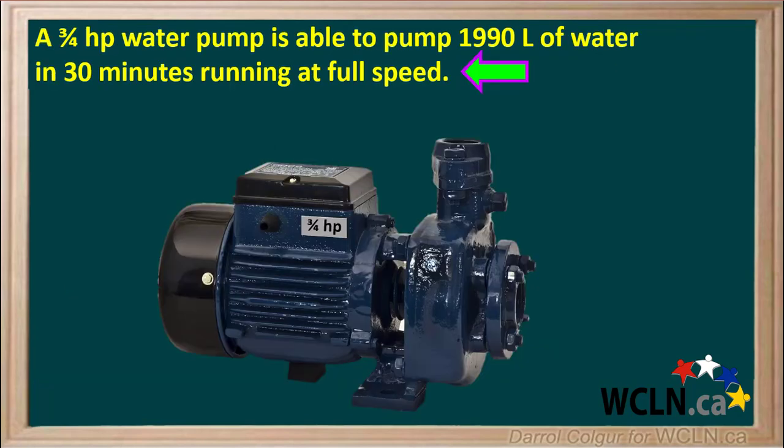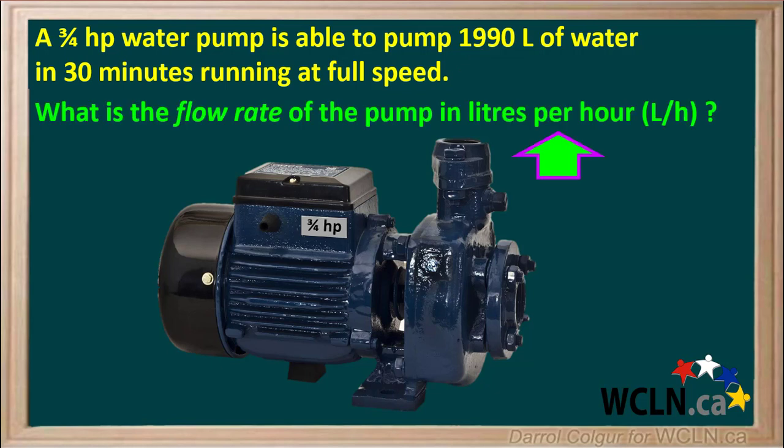Here is another example. A three-quarter horsepower water pump is able to pump 1,990 liters of water in 30 minutes running at full speed. We are asked to determine the flow rate of this pump in liters per hour. Pause the video and try working through this example on your own, then resume to check your answer.